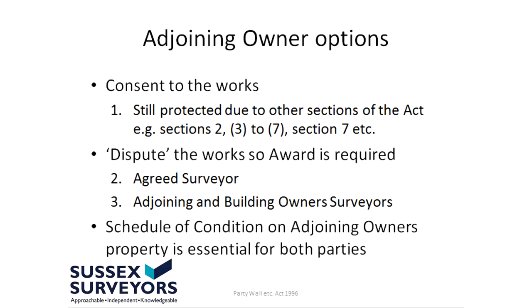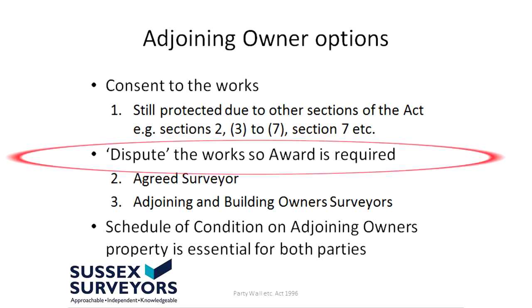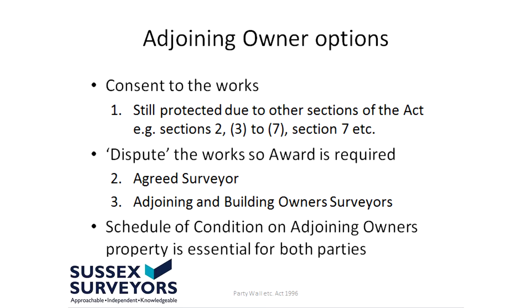If, as the adjoining owner, you have any reason at all to be concerned about the works — which means you're not willing to give unconditional consent — then we have what's referred to as a dispute. Some examples would include if the building owner was doing a loft conversion and you were worried about your conservatory roof being damaged, or the building owner is doing a rear extension and the fence between your two properties has to be removed so the wall can be built — you could be worried about your dog getting out. Those are all legitimate reasons, and in which case, as we have a dispute, an award has to be prepared.